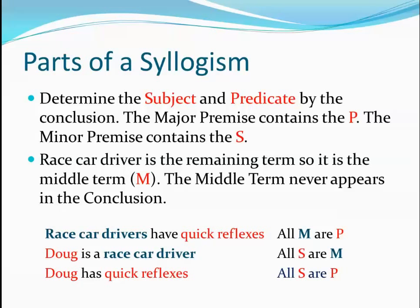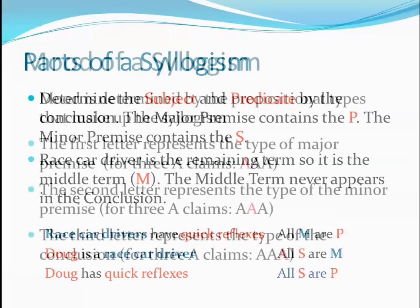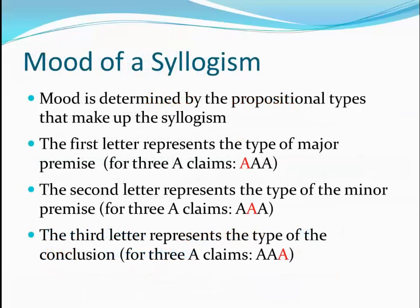The middle term is symbolized by the letter M, so the three letters representing the three terms of the syllogism are S, P, and M. As we've seen, a syllogism is built from three standard categorical claims: the A, E, I, and O claims.